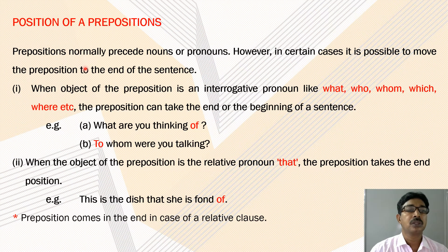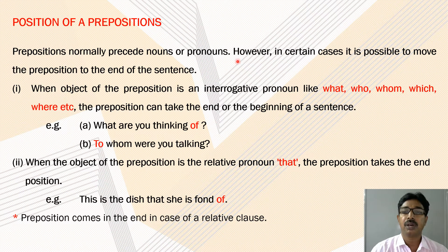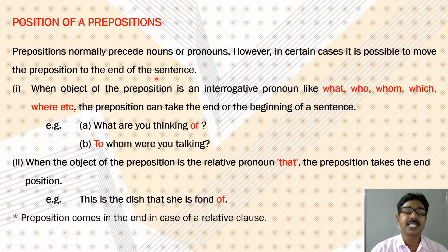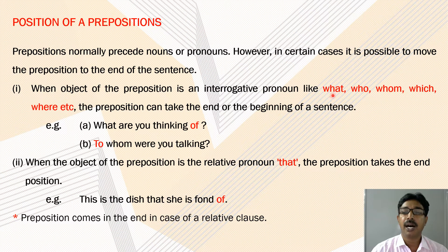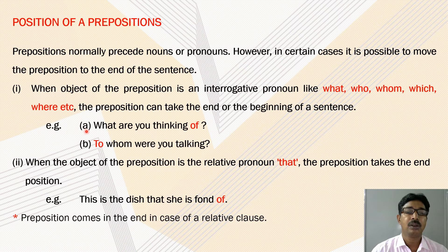Now let us see the position of prepositions. Prepositions normally precede nouns or pronouns. However, in certain cases, it is possible to move the preposition to the end of the sentence — when the object of the preposition is an interrogative pronoun like what, who, whom, which, where, etc. The preposition can take the end or the beginning of the sentence. Example: 'What are you thinking of?' or 'To whom were you talking?'